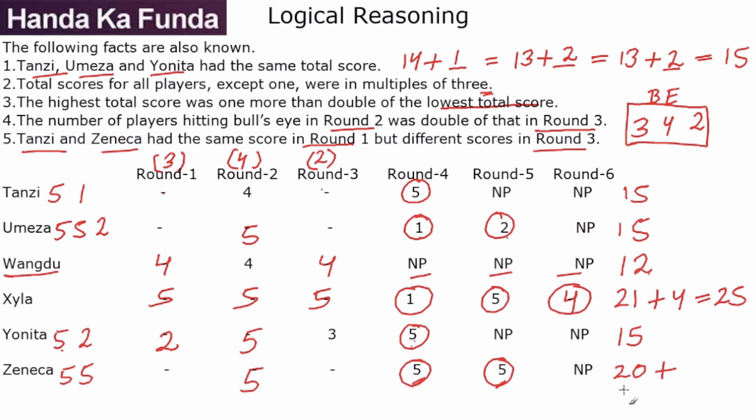Let's look at Zeneca's score. So Zeneca's score should be more than 20. It should also be a multiple of 3. So this could be 21 or this could be 24. Now if this is 21, then these scores will be 5-5-1 or it could be 5-5-4. Now the last condition says that they have the same score in round 1 but different scores in round 3. If I make it 5-5-1, then this will be 5-4-1, Tanzi and Zeneca will be 5-5-1. Then they have the same score in round 1 and the same score in round 3, which is not possible, which means the assumption that Zeneca in the missing round scored 1 is incorrect, or the total for Zeneca is 21. That is also incorrect.